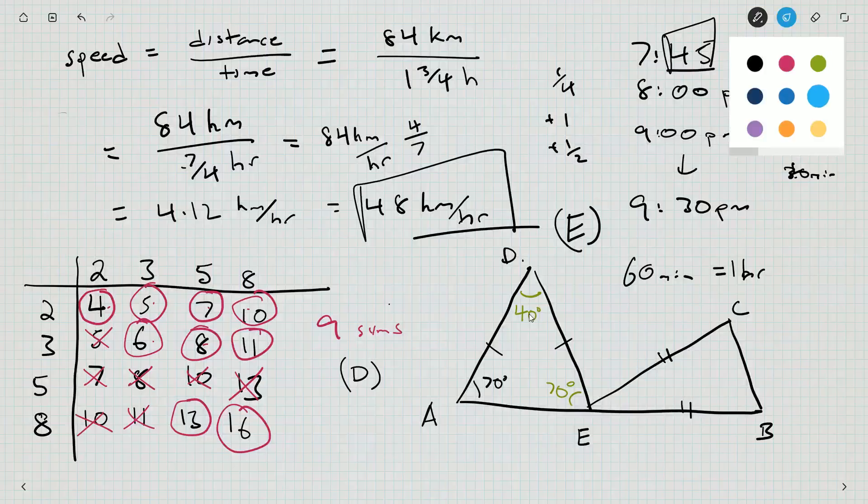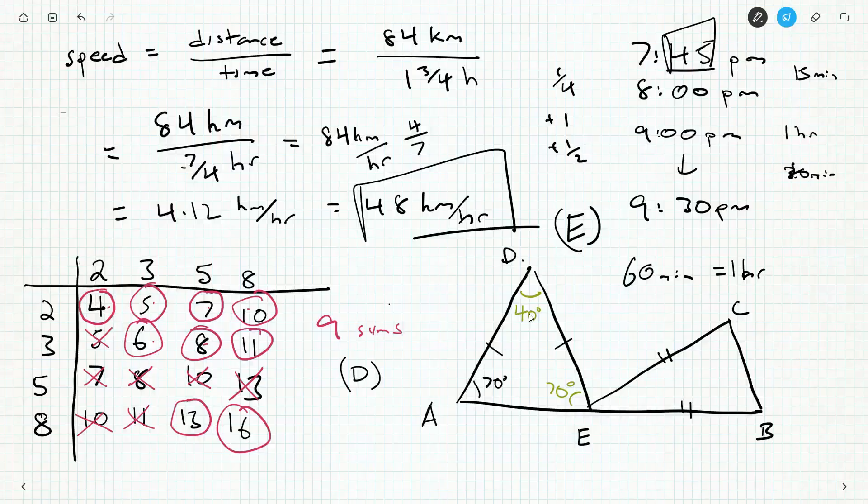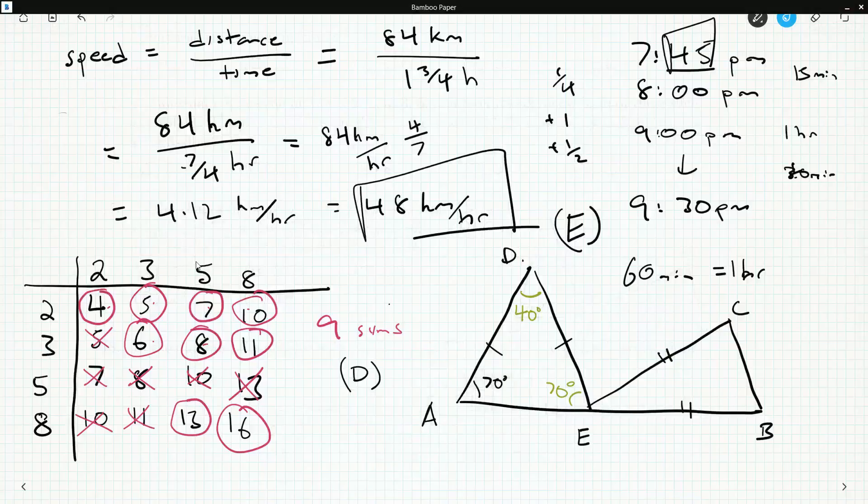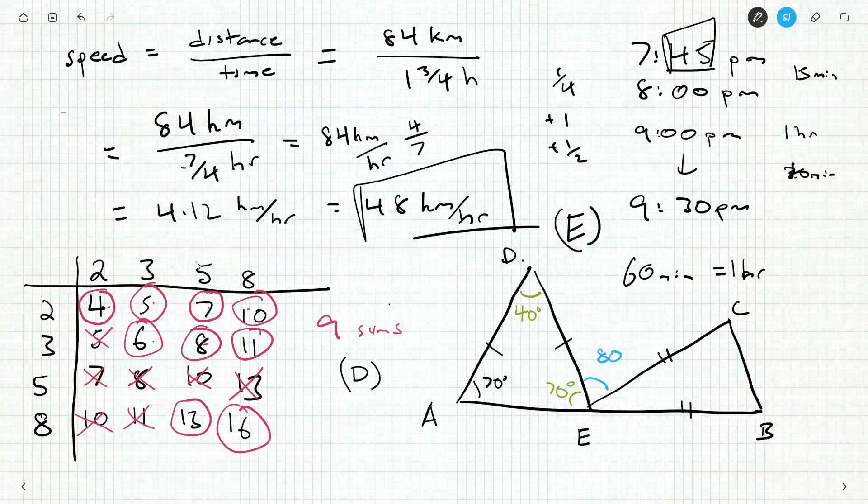So, that fully describes one of these triangles. Now, if we go back and take a look, DEC is twice ADE. Well, I know what ADE is now. And twice that is going to be 80 degrees.